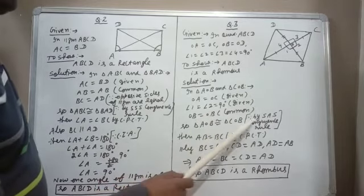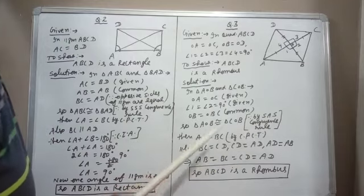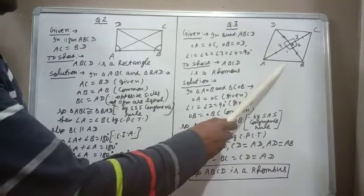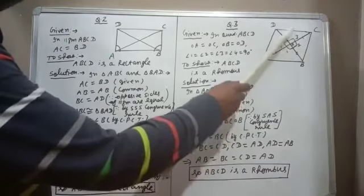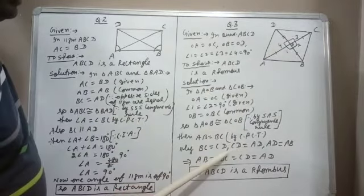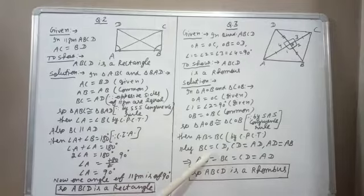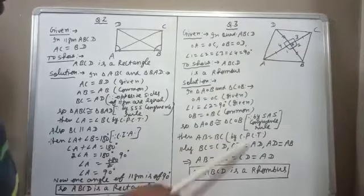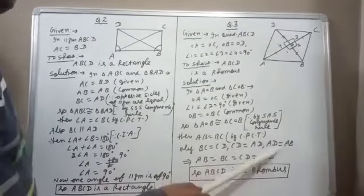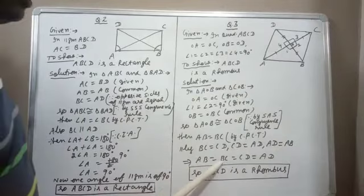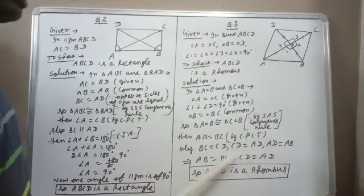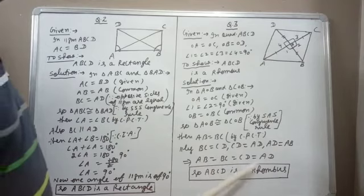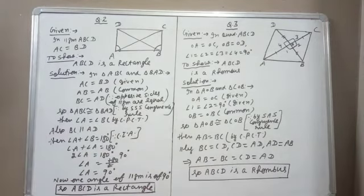Consider triangles AOB and COB. OA = OC is given, angle 1 = angle 2 = 90° is given, and OB is common. So triangle AOB is congruent to triangle COB by SAS congruence, giving AB = BC. Similarly BC = CD, CD = AD, and AD = AB. Therefore AB = BC = CD = AD — all four sides are equal — so ABCD is a rhombus. Tomorrow we will discuss more questions of this exercise.